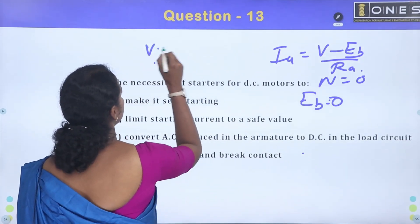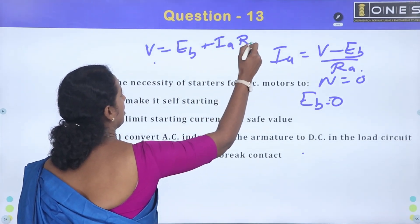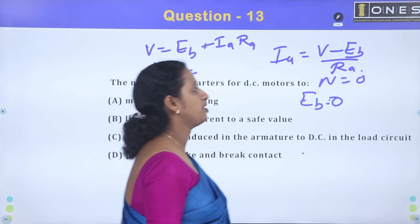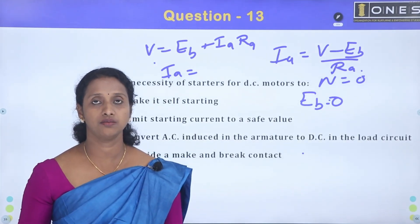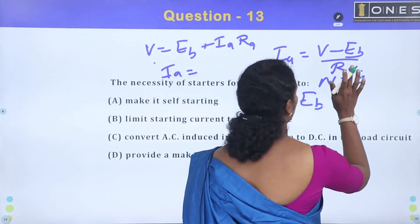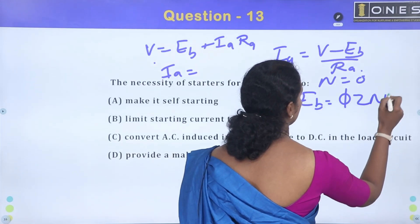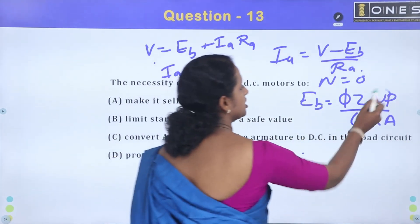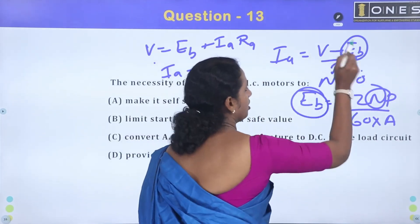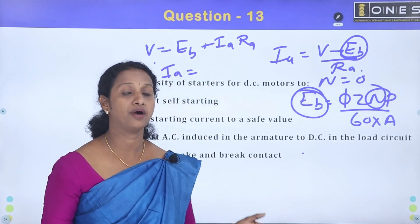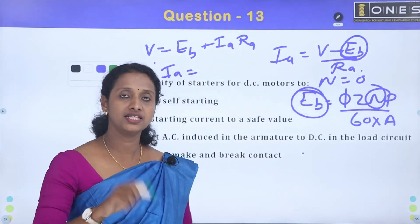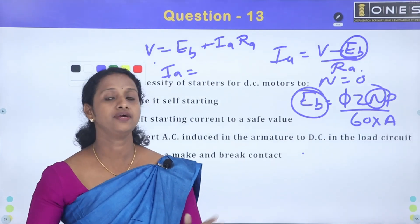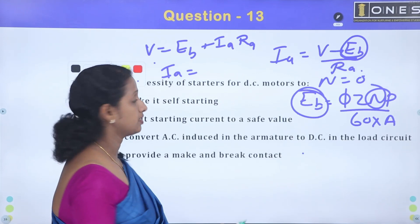The voltage equation is: V = E_B + I_A × R_A. Supply voltage equals back EMF plus the load component. So current I = (V − E_B) / R. At starting, speed is zero, so back EMF is zero. Therefore V is not subtracted, and if we have high current, we need to limit that current. That is why starting current is very high.